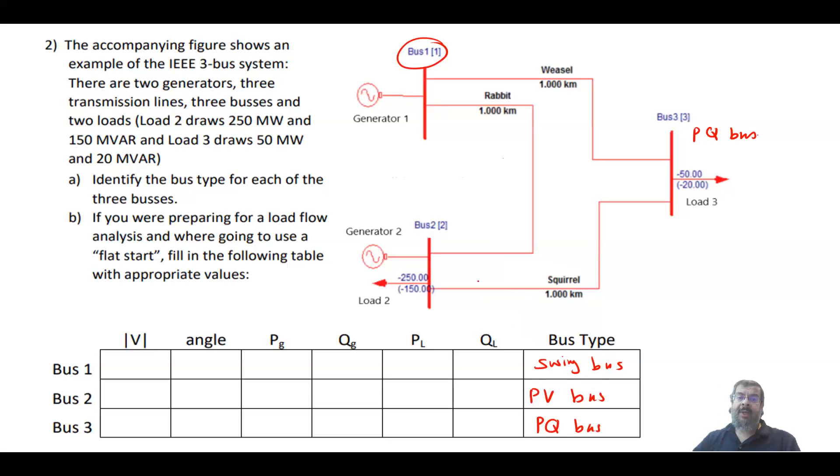What is this bus doing in the calculations? Basically, I know the load here, P is 50, and this is 250. So the total load is 300 megawatt plus the losses.